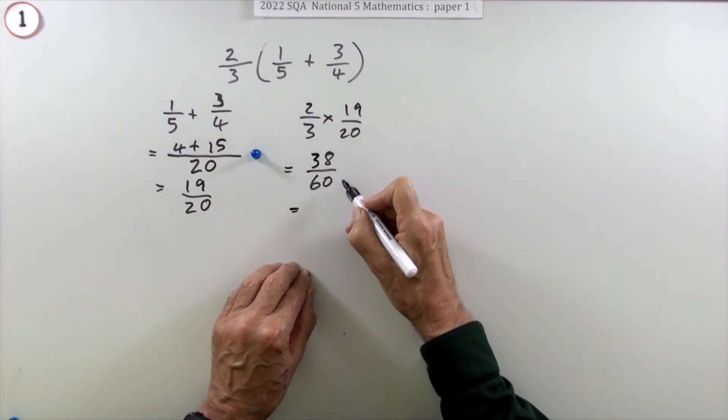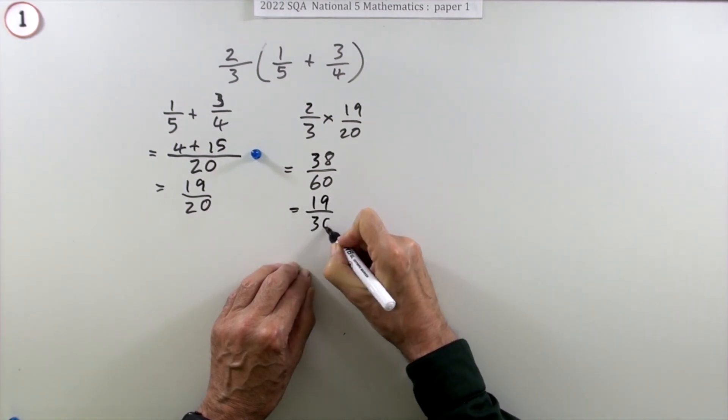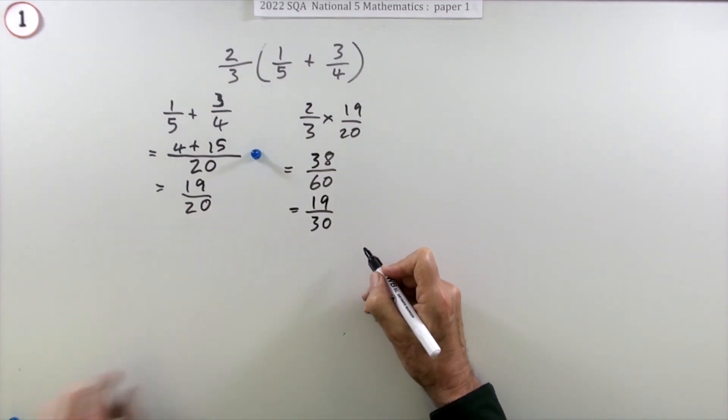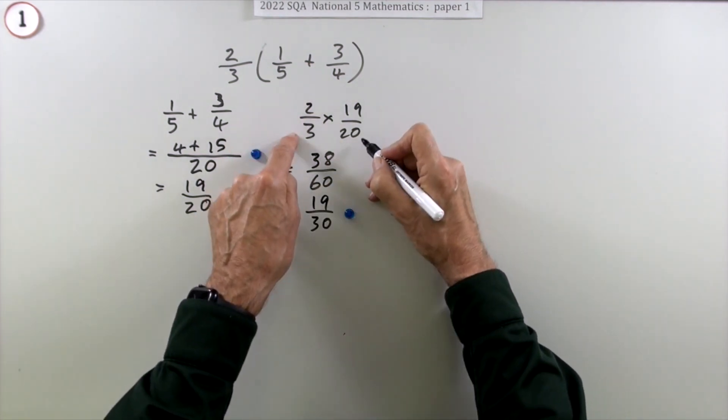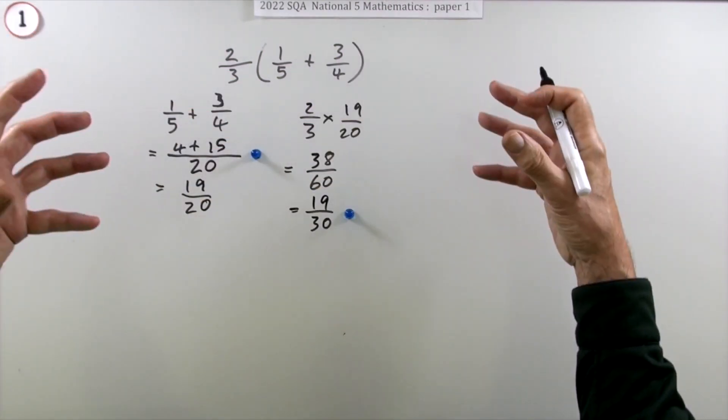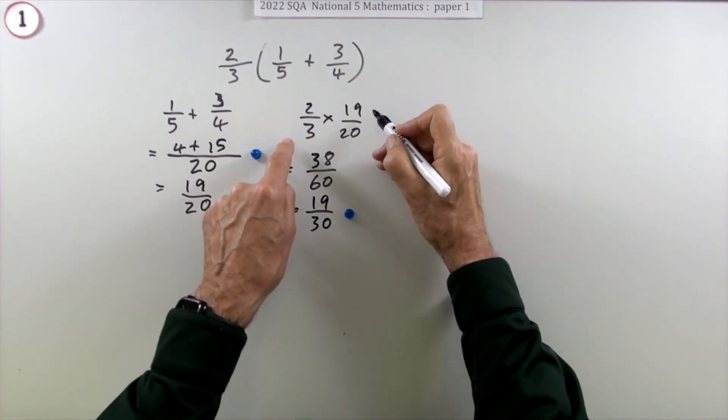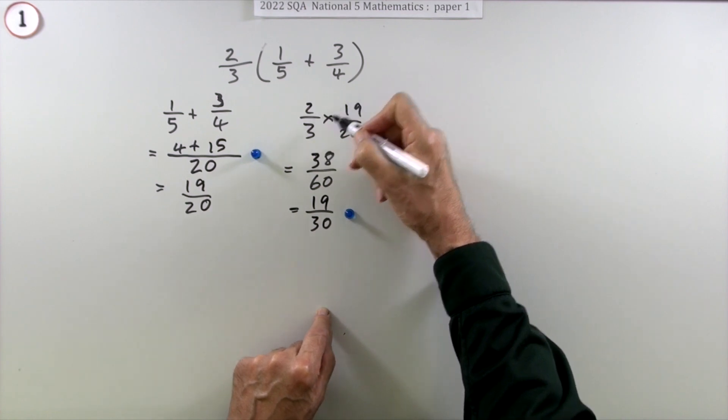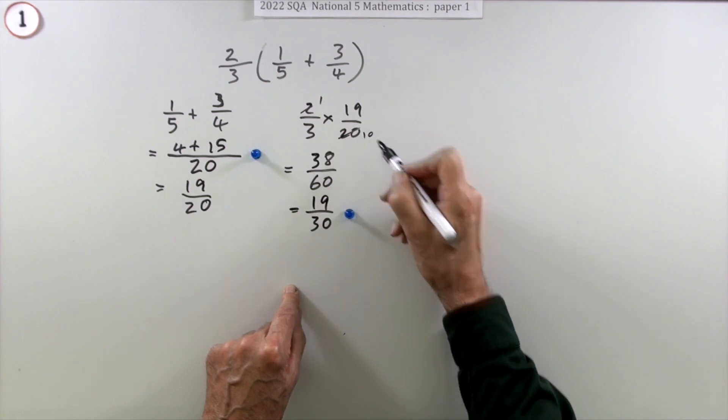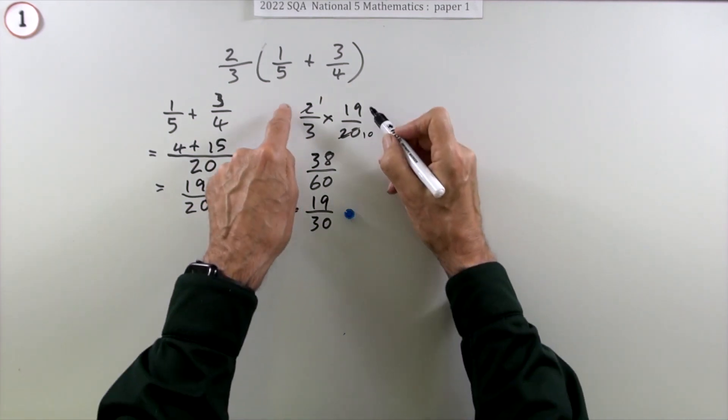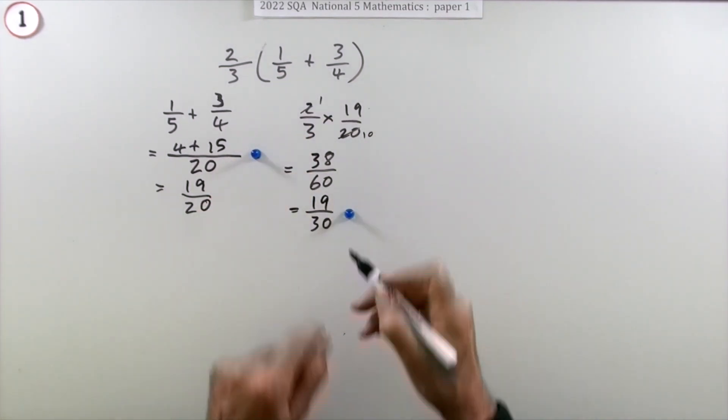38 over 60, that's just multiplying them at face value. Multiply the two numerators, multiply the two denominators, and then try and simplify your answer by finding something that divides into them both. Well, they're both even, so that's 19 out of 30. Or rather than do the multiplication which ends up with bigger numbers and then try to simplify those bigger numbers, you could do the simplification at the beginning. Is there anything that will divide into any numerator with any denominator? And there is: two will go into that once, two will go into that 10 times.